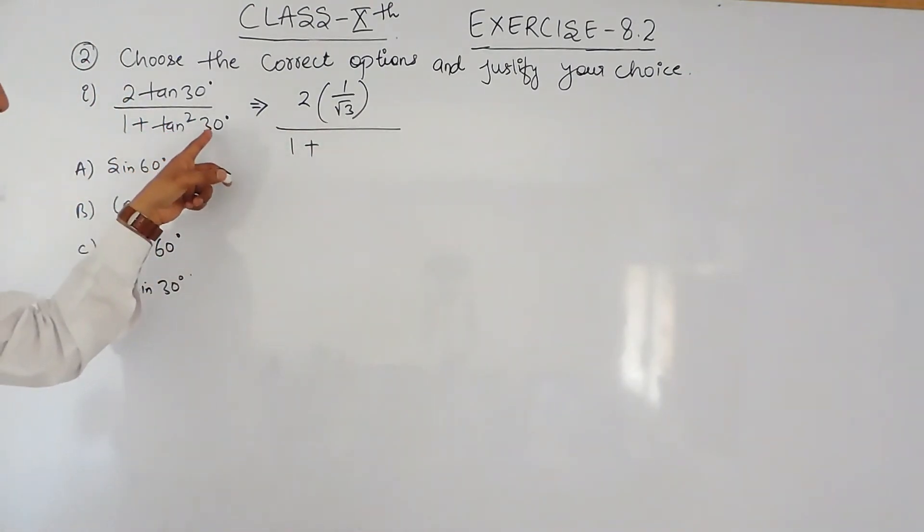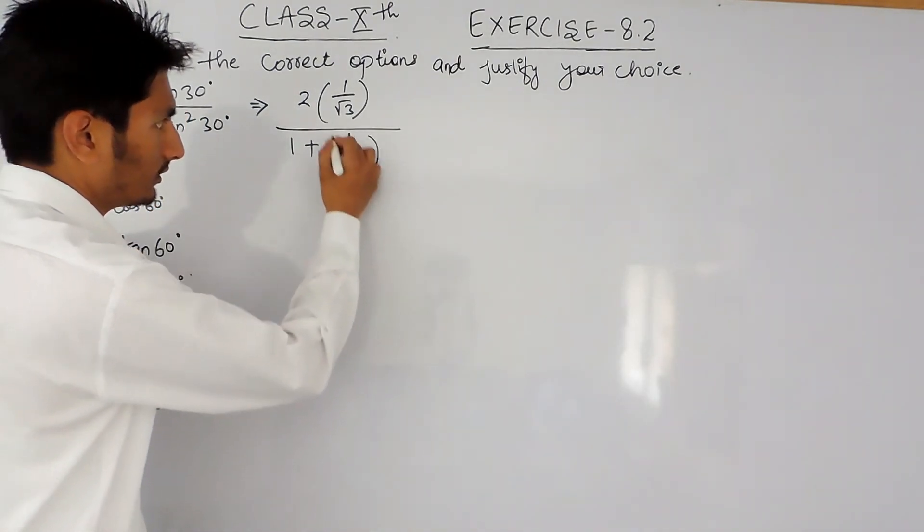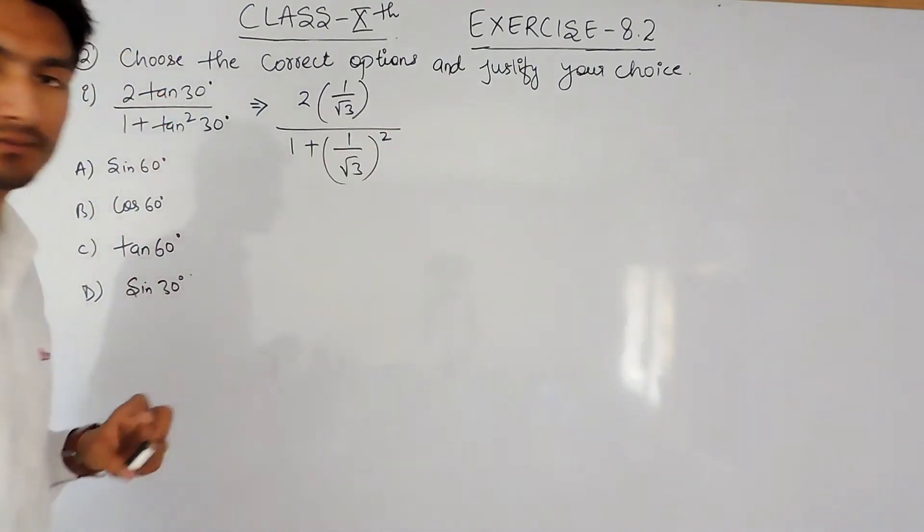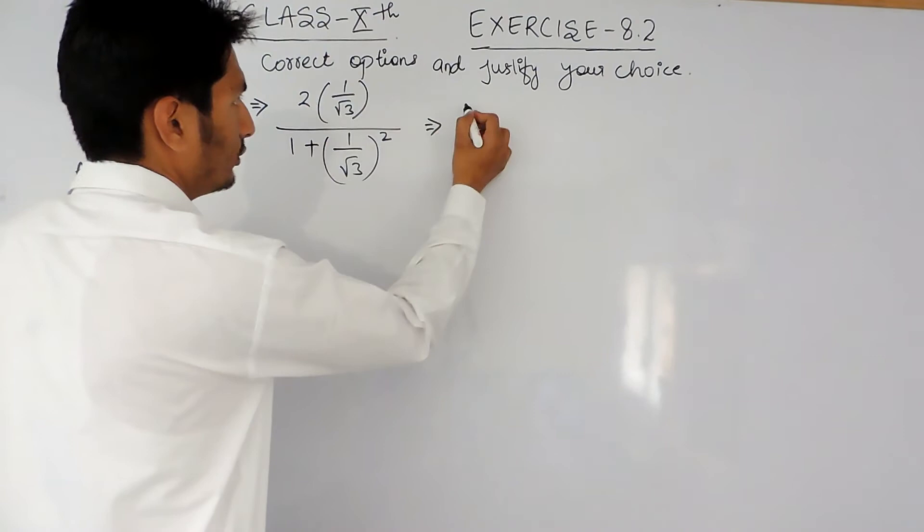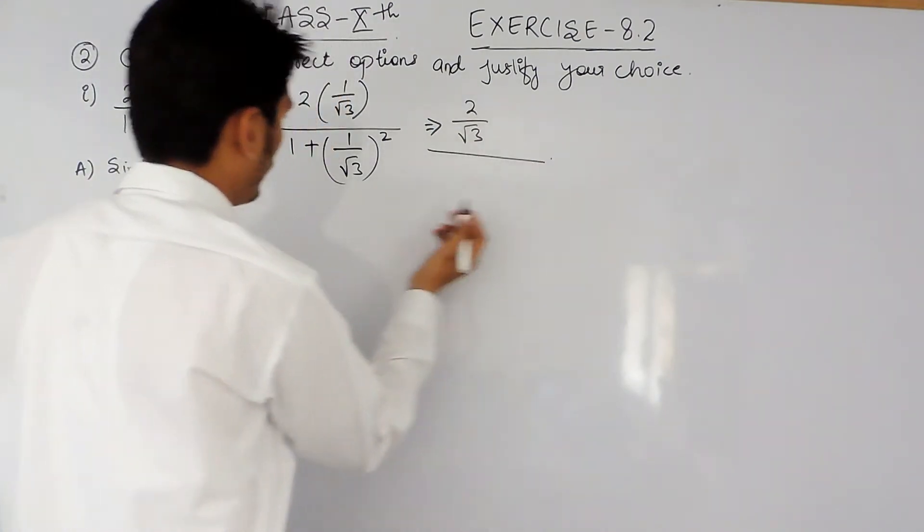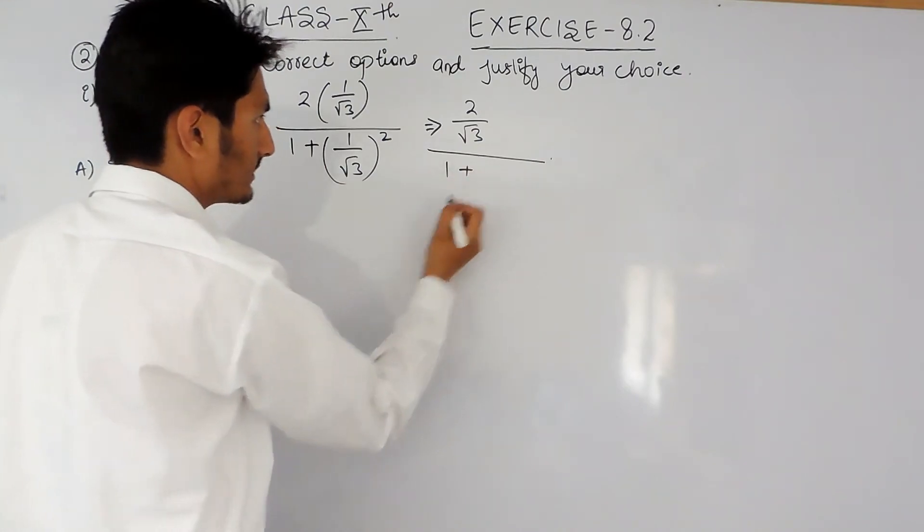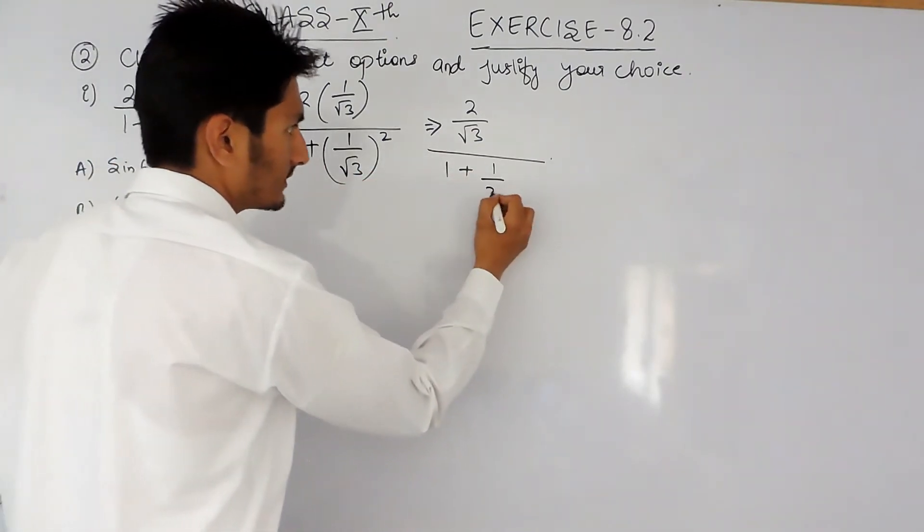Now solve this further. This value will be 2/√3 divided by 1 plus (1/√3)². It is 1 plus 1 squared is 1, and √3 squared is 3.